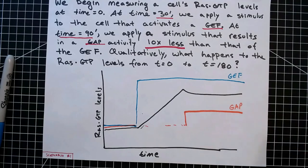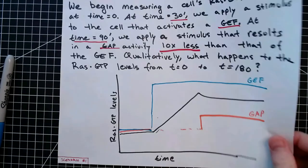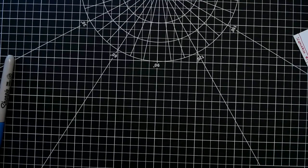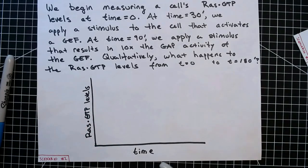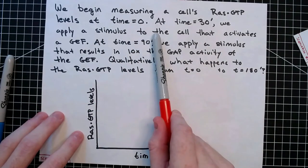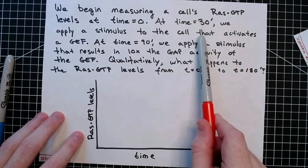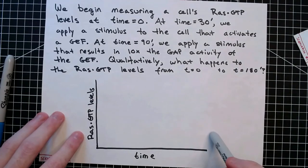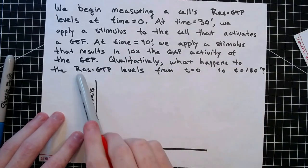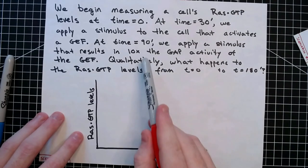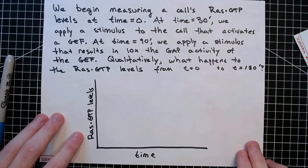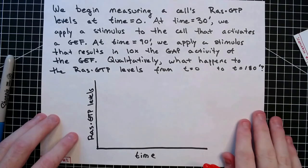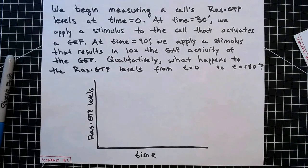Let's call this scenario 1. Now let's consider another scenario. Very similar to the last case: we begin measuring the cell's RAS-GTP levels at time 0, and at time 30 minutes we apply a stimulus that's going to activate some GEF protein. Then at 90 minutes, we apply a stimulus that results in GAP activity, but this time it results in 10 times the GAP activity of the GEF protein itself. Qualitatively, what's going to happen to the RAS-GTP levels here? Take a moment, pause the video, and work it out for yourself.